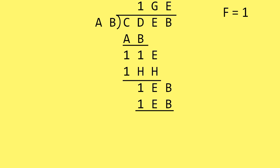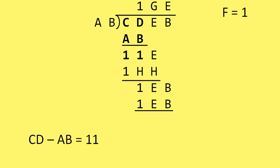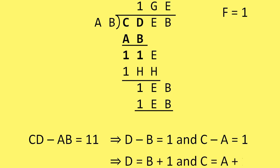The next step we would take in division would be to subtract right here. CD minus AB is going to be equal to 11. The E would be brought down after the subtraction. So D minus B equals 1 and C minus A equals 1. If we rework those equations, D would be equal to B plus 1 and C would be equal to A plus 1. Since we don't know what A or B is yet, we don't have the final value for C and D.